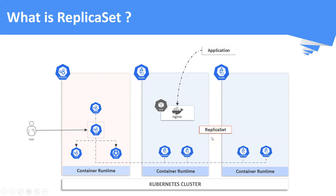A replica set is a Kubernetes object that runs multiple instances of a pod and keeps the specified number of pods constant. With respect to replica set, the pods are referred to as replicas. Replica set's purpose is to maintain the specified number of pods running in the cluster at any given time, to prevent users from losing access to their application when a pod fails.